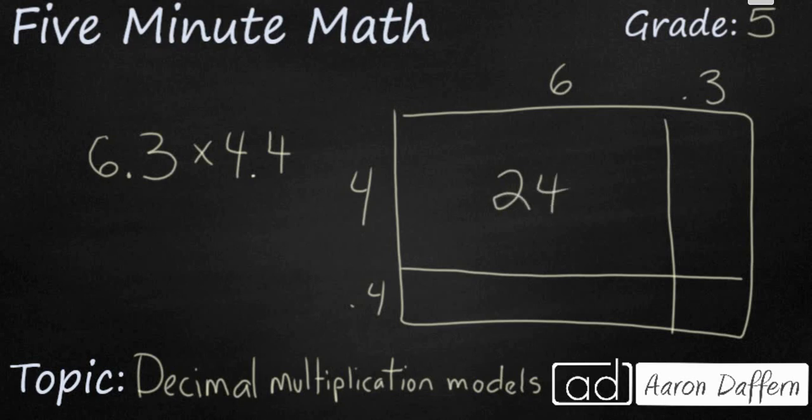6 times 4 is 24. 6 times 0.4 is going to be 24, but it's a decimal, so we're going to make 2.4. And the same thing happens over here. 4 times 0.3.